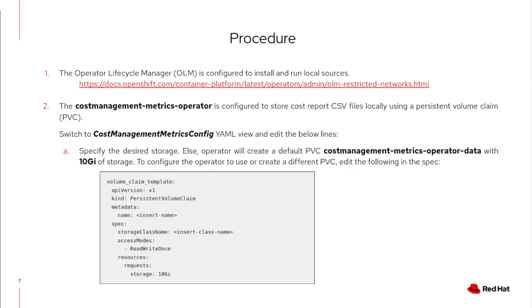The procedure to add an OpenShift Container Platform cluster as a cost management source operating on a restricted network is different. Step 1: The Operator Lifecycle Manager is configured to install and run local sources. Follow the OpenShift documentation link given here on using Operator Lifecycle Manager on restricted networks to create a local mirror of the cost management metrics operator. Once done, the operator can be installed in the same way as demonstrated for a connected cluster.